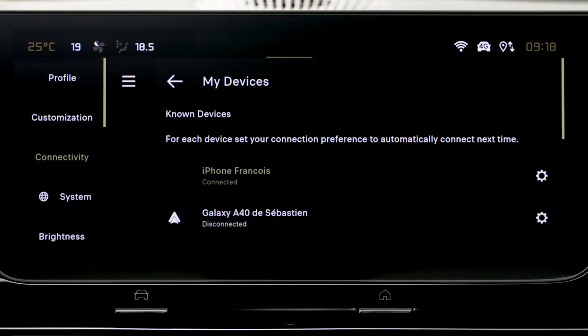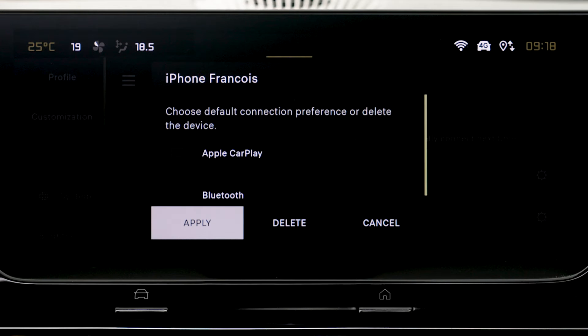If the device has previously been connected to the system via Bluetooth, select the device's settings in the list of known devices and choose Apple CarPlay as the wireless connection mode.